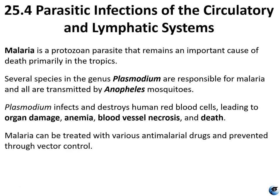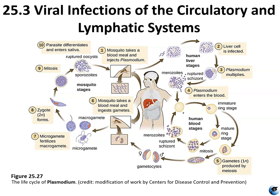Malaria is one of the most common vector-borne infectious diseases, widespread in tropical and subtropical regions including parts of tropical Asia, Africa, and Central and South America. Most cases reported in the United States are related to travel or military duty in endemic areas. Malaria is caused by protozoans of the genus Plasmodium — several species are responsible — and they are usually transmitted by Anopheles mosquitoes. Plasmodium infects and destroys human red blood cells, leading to organ damage, anemia, blood vessel necrosis, and death. It can be treated with various anti-malarial drugs and prevented through vector control. Figure 25.27 illustrates the life cycle of Plasmodium, which comprises three distinct stages characterized by alternating extracellular forms.